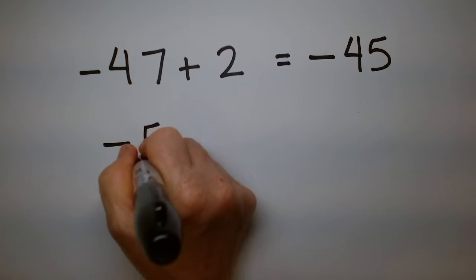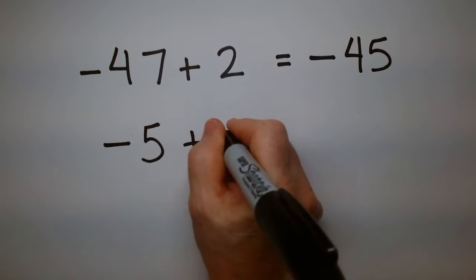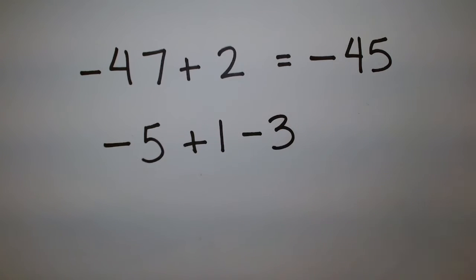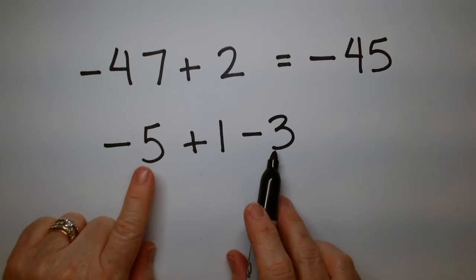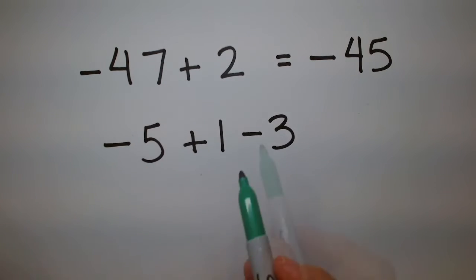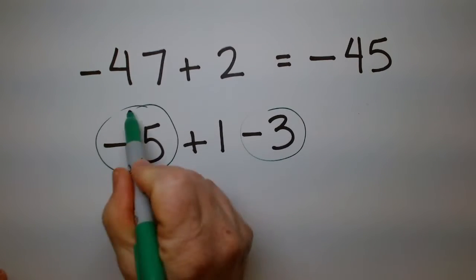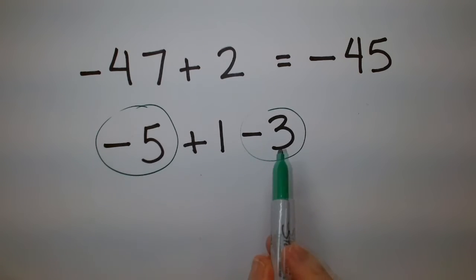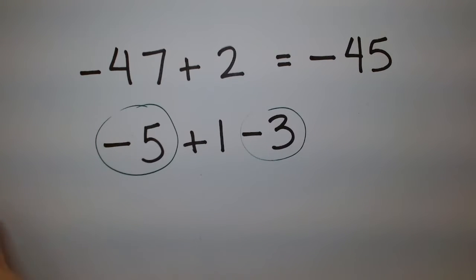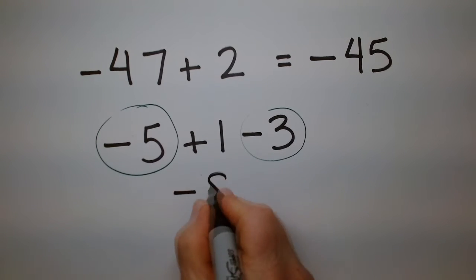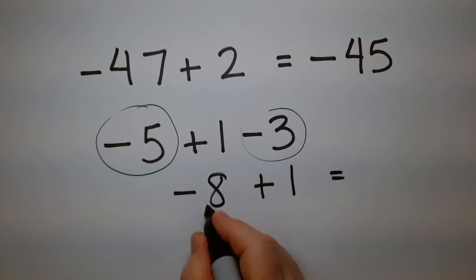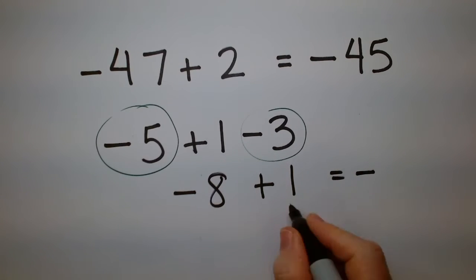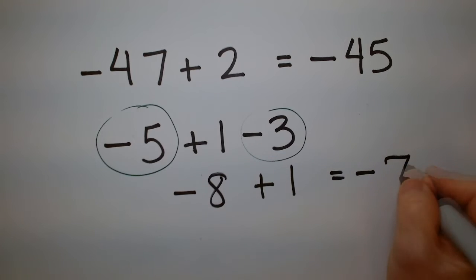What if we have minus 5 plus 1 minus 3? Because the minus 5 and minus 3 are the same sign, we combine them: 5 and 3 combine to be negative 8. Then we also have the plus 1. The 8 is bigger, so it's negative. The difference between 8 and 1 is 7, giving us negative 7.